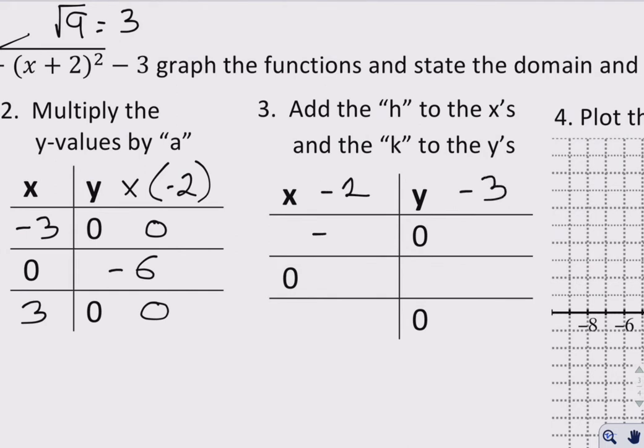So negative 3 becomes negative 5, 0 becomes negative 2, and 3 becomes 1. As for the y values, we get negative 3, negative 9, and negative 3 again.